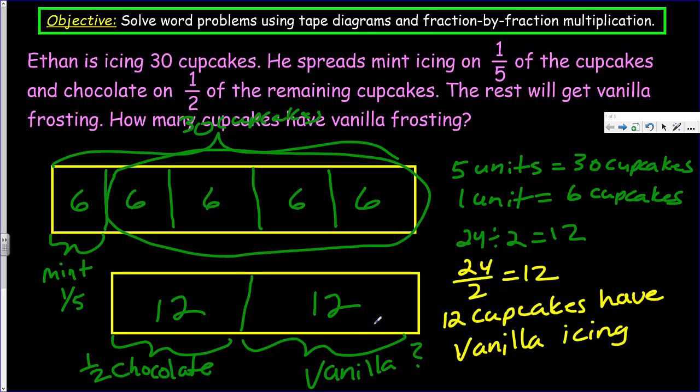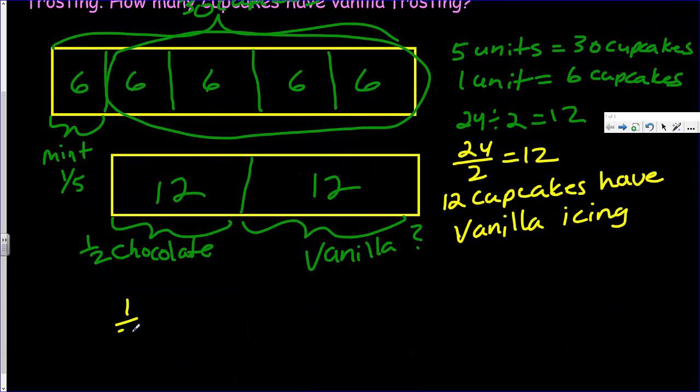We can even think of this in another way, really. See, when we label this one-fifth over here, for the mint icing, we had a fraction of the cupcakes that were remaining. So if this was one-fifth, that meant there were four-fifths remaining here. One-half of the remaining cupcakes get chocolate icing. So we could say one-half of what fraction? So one-half of four-fifths, which we know of means multiply.